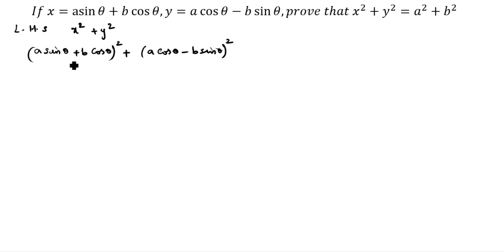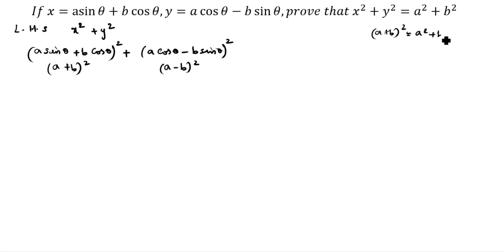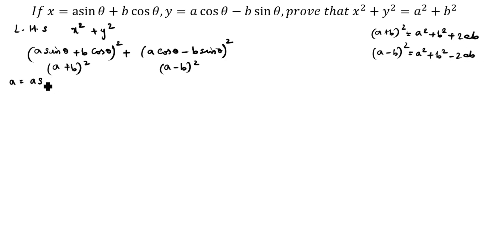Now we will split this using algebraic identities. The first term is in (a plus b) whole square format, and the second is in (a minus b) whole square format. The formula for (a plus b) whole square is a square plus b square plus 2ab, and (a minus b) whole square is a square plus b square minus 2ab. Here, for the first bracket, a is a sin theta and b is b cos theta. For the second bracket, a is a cos theta and b is b sin theta.